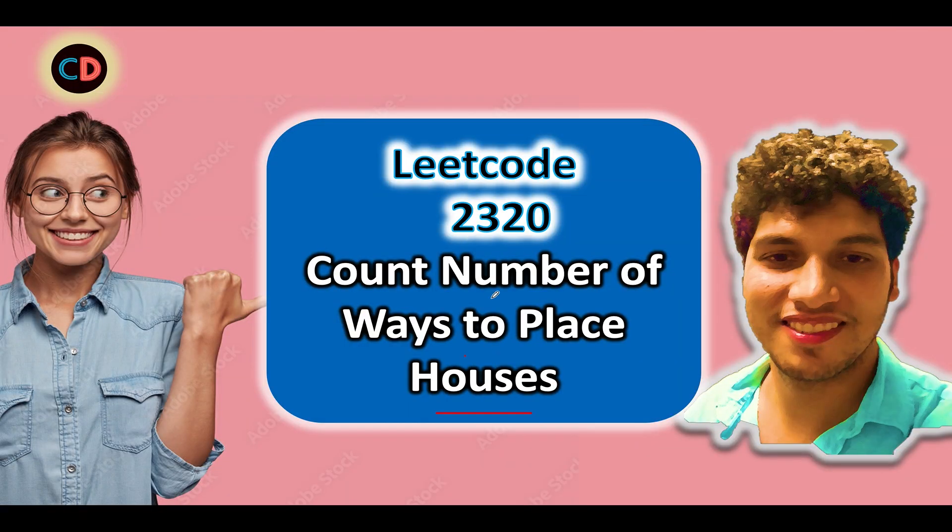LeetCode 2320 count number of ways to place houses. As per the question we are given a street and along both sides, the upper and the lower, there are n plots. We need to place houses on these n plots.